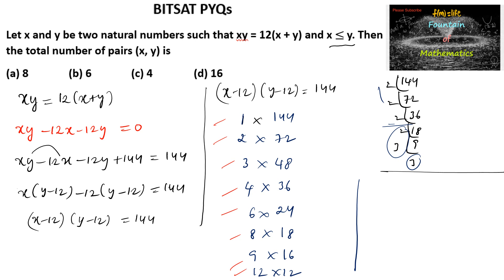Since x is smaller than y, x minus 12 must be smaller than or equal to y minus 12. These are the smaller numbers, so the possibilities are 8. The answer is option (a) 8.